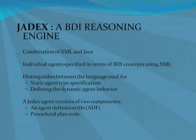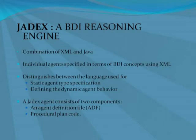JDEX distinguishes explicitly between the language used for static agent type specifications and for defining the dynamic agent behavior. A JDEX agent consists of two components: the first is an agent definition file for specifying beliefs, goals, and plans as well as their initial values. The second component is the procedural plan code.